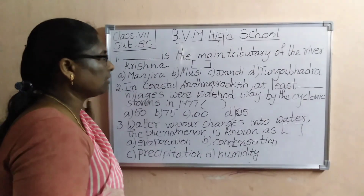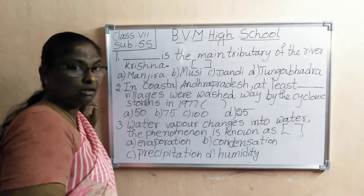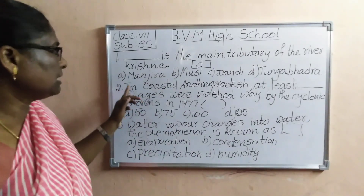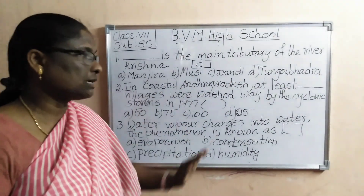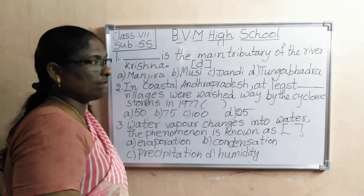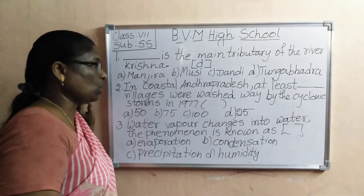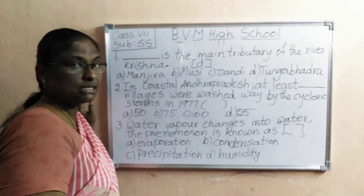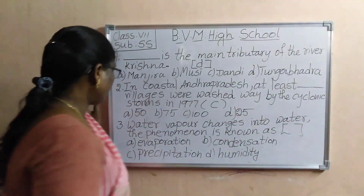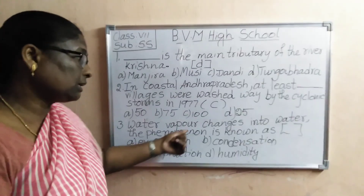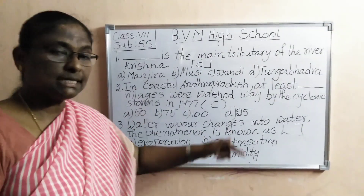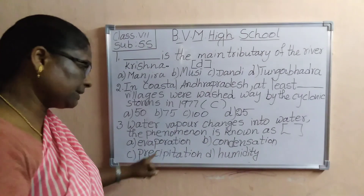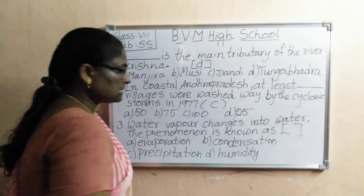First one: dash is the main tributary of river Krishna. The answer is Tungabadra — that is D. Second one: in coastal Andhra Pradesh, at least dash villages were washed away by the cyclonic storm in 1977 — there were 100 villages. Third one: water vapor changes into water — which phenomenon? That is condensation — answer B.